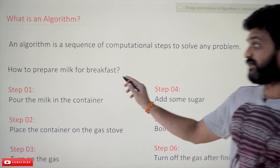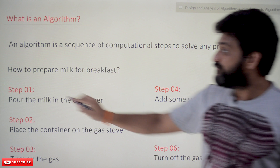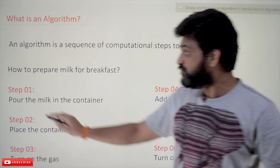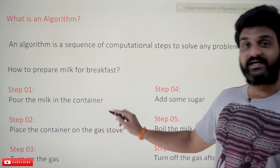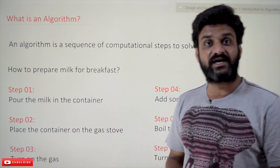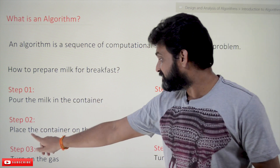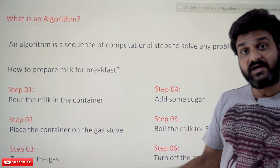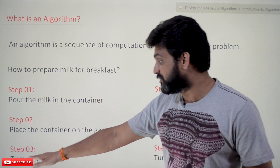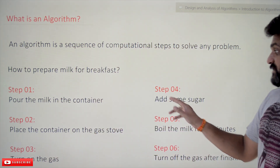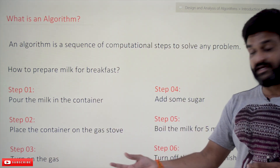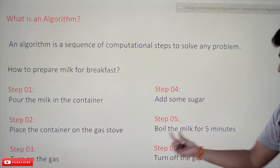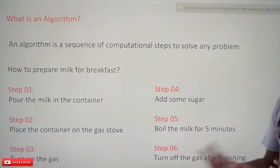What are those steps? Step 1: pour the milk in the container. Step 2: place the container on the gas stove. Step 3: turn on the gas. Step 4: add some sugar into the milk. Step 5: boil the milk for 5 to 10 minutes, based upon our requirement.